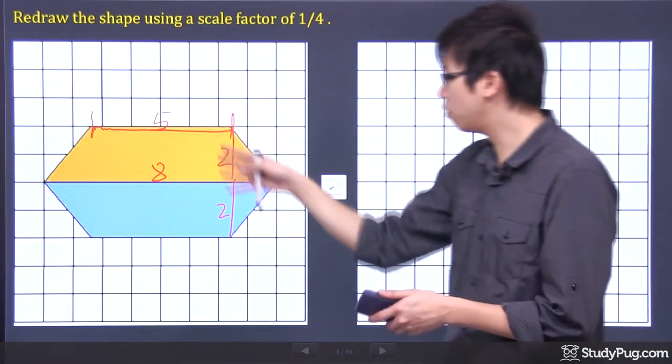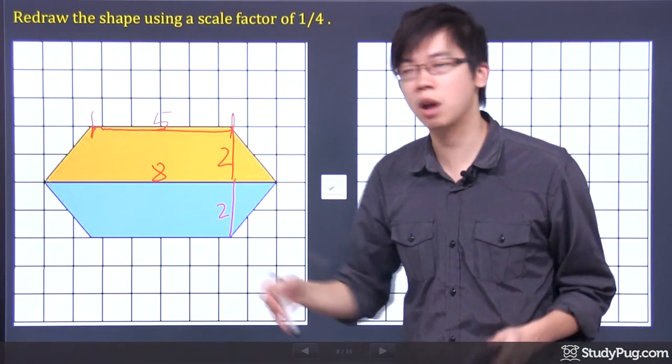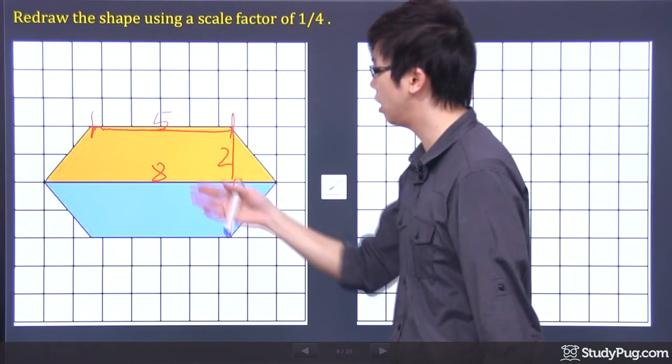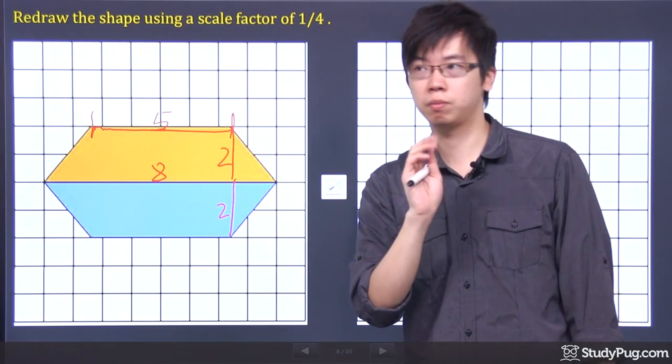Now we're going to take every dimension here and divide by 4. Let's look at the center line first because it's easier. 8 divided by 4, what do we have? We've got 2. So it's going to be very small.